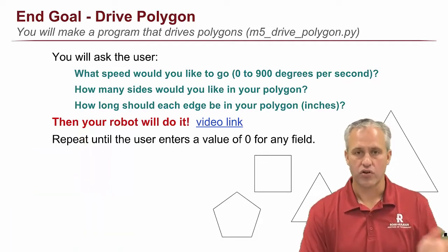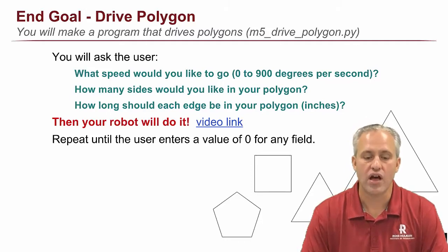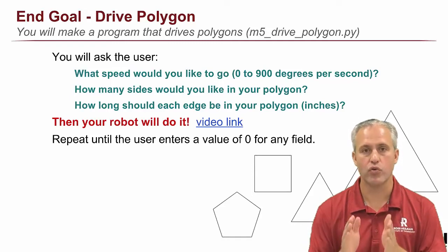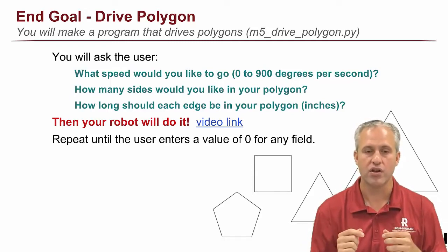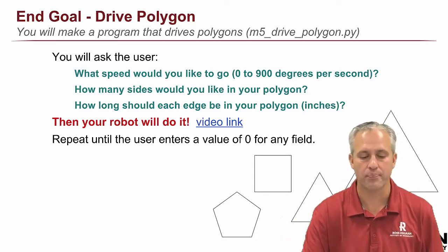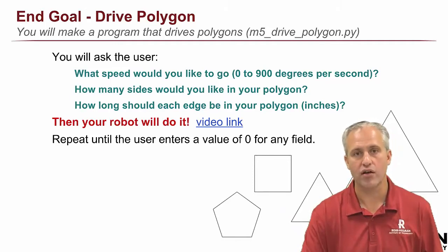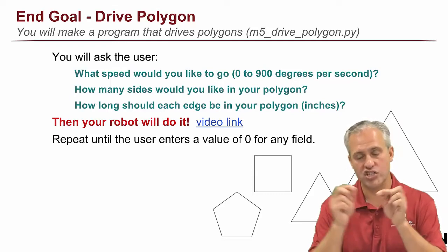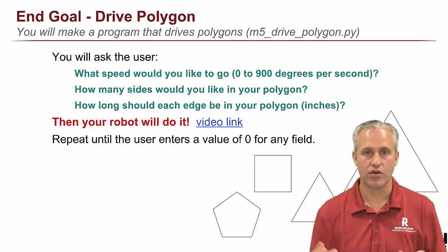The goal this time is to learn about the Drive Motors, and there's a project at the end called Drive Polygon. The idea is that your robot is going to drive on the ground in the shape of various polygons — triangles, squares, pentagons, hexagons. You're going to make a program that tells your robot how fast to drive, how long each edge is, and how many sides the polygon has — three for a triangle, four for a square, and so on.